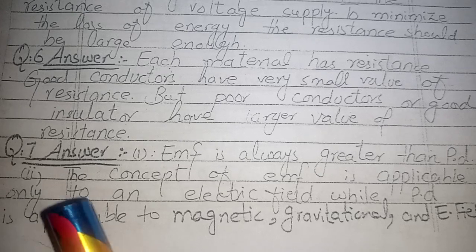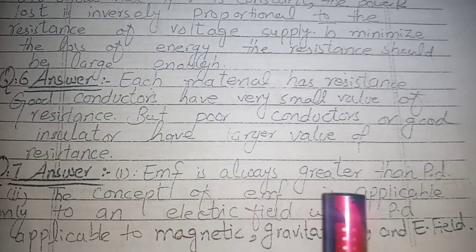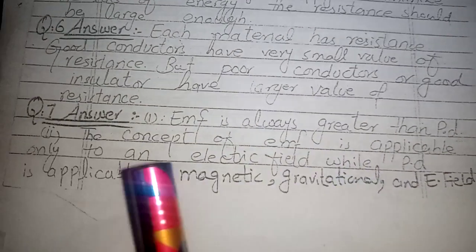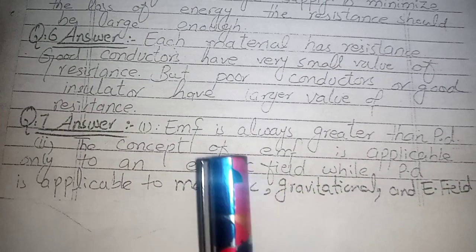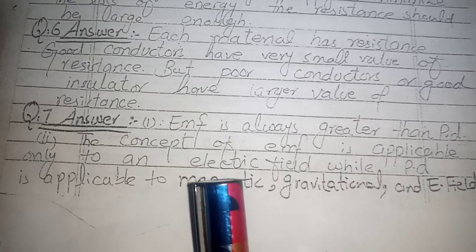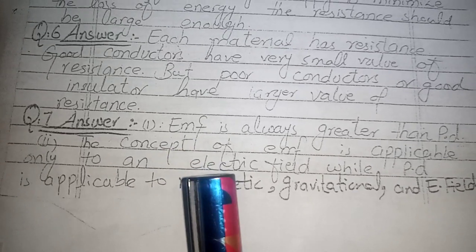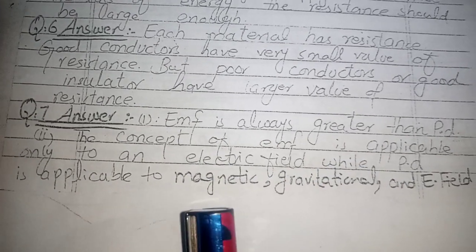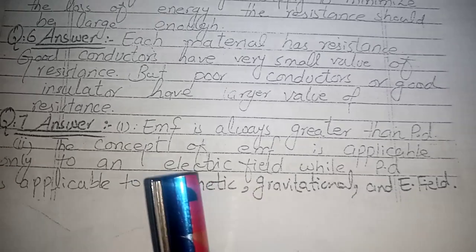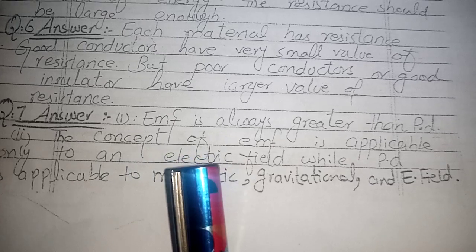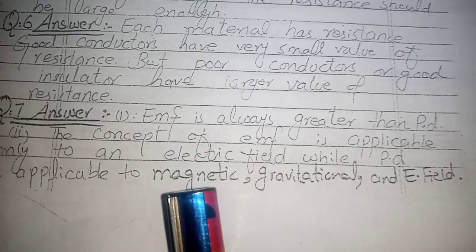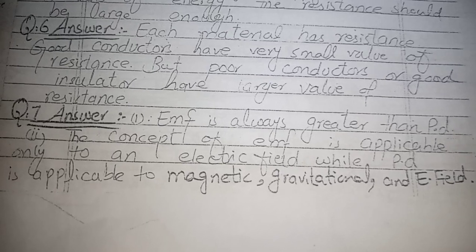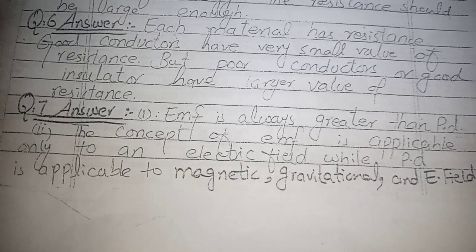Question 7: How are potential difference and EMF different? EMF is an electromotive force and is always greater than potential difference. The concept of EMF is applicable only to an electric field, where there is electric field and flow of electrons. Potential difference, however, is applicable to magnetic, gravitational, and electric fields. That is the main difference between EMF and potential difference.